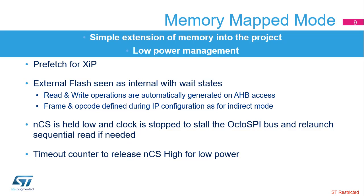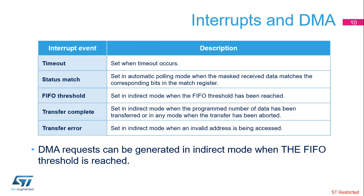This mode also supports SIOO mode, which is supported by some flash memories, allowing the controller to send instructions only once and remove the instruction phase for the following accesses. The OctoSPI has five interrupt sources: time out, status match — when the masked received data matches the corresponding bits in the match register in automatic polling mode — FIFO threshold, transfer complete, and transfer error.